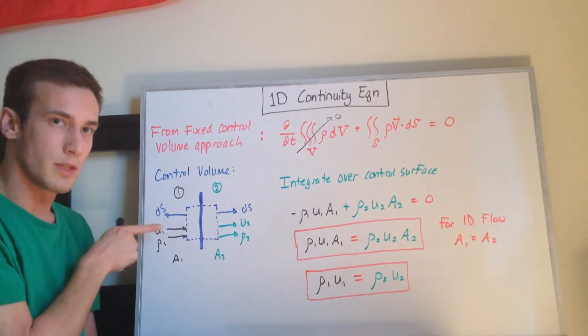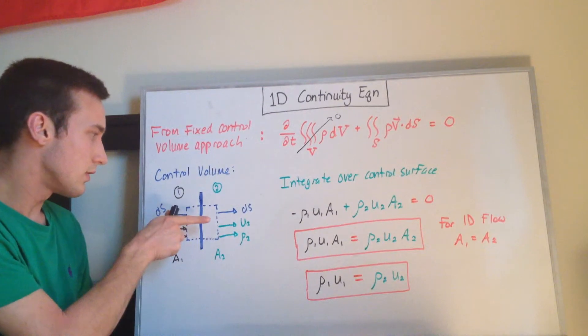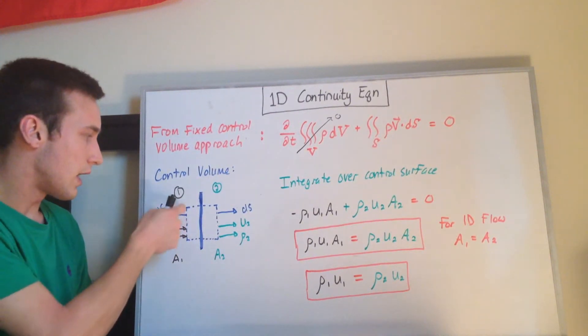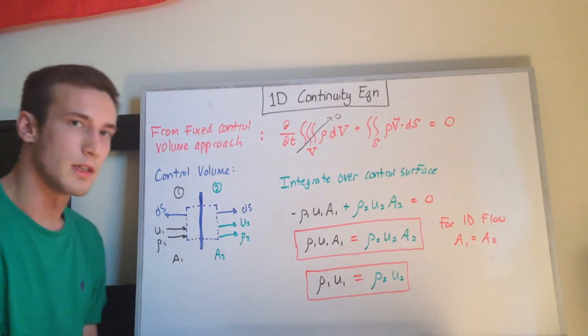So on the left side, u1 is the velocity going into the control volume, rho1 is the density, and this control volume area is a1.